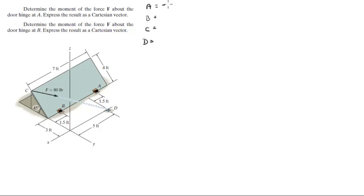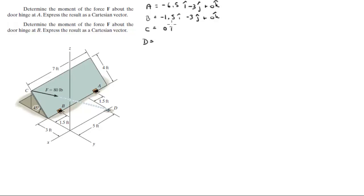A sits at negative 6.5i minus 3j plus 0k. B sits at negative 1.5i minus 3j plus 0k. C sits at 0i minus 5.83j plus 2.83k, and D sits at negative 5i plus 0j plus 0k.